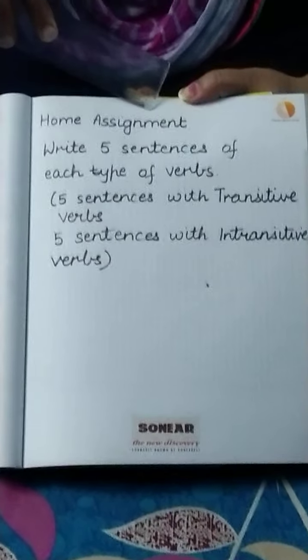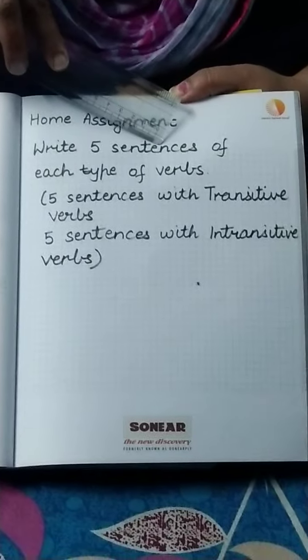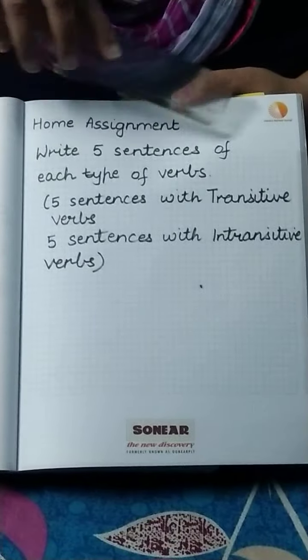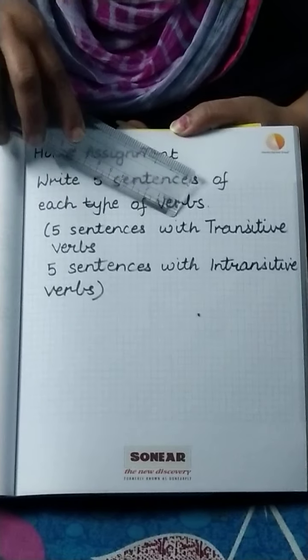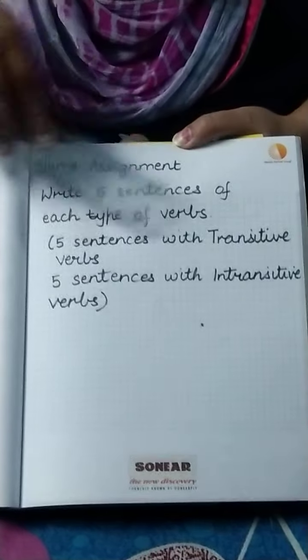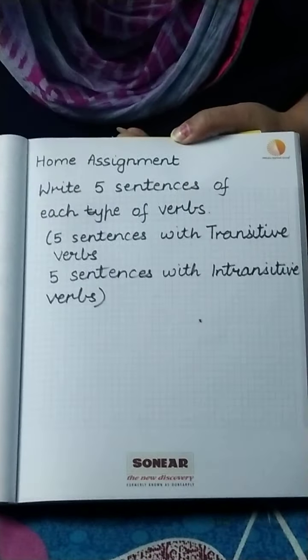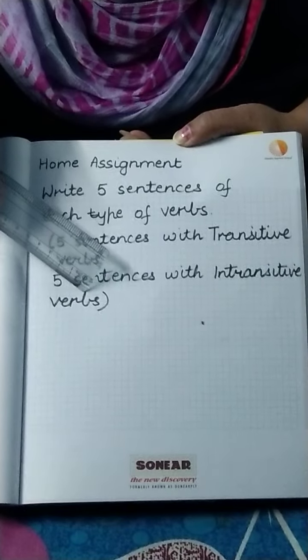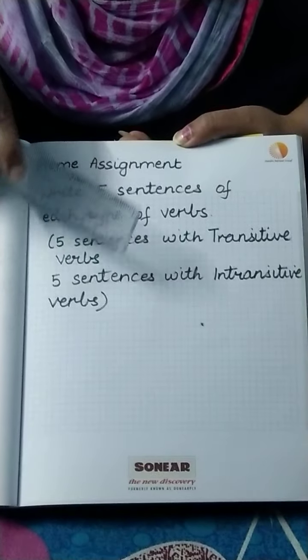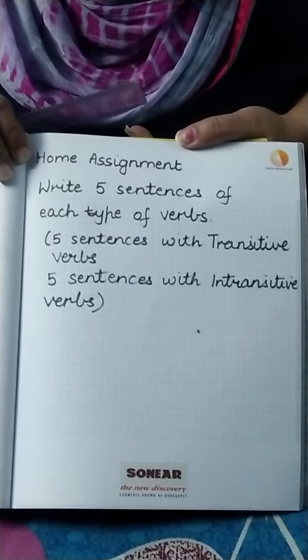Now for today's home assignment: write five sentences of each type of verb — five sentences with transitive verbs and five sentences with intransitive verbs. I hope the topic of verbs is clear to you and you are able to complete your home assignment on your own. Thank you.